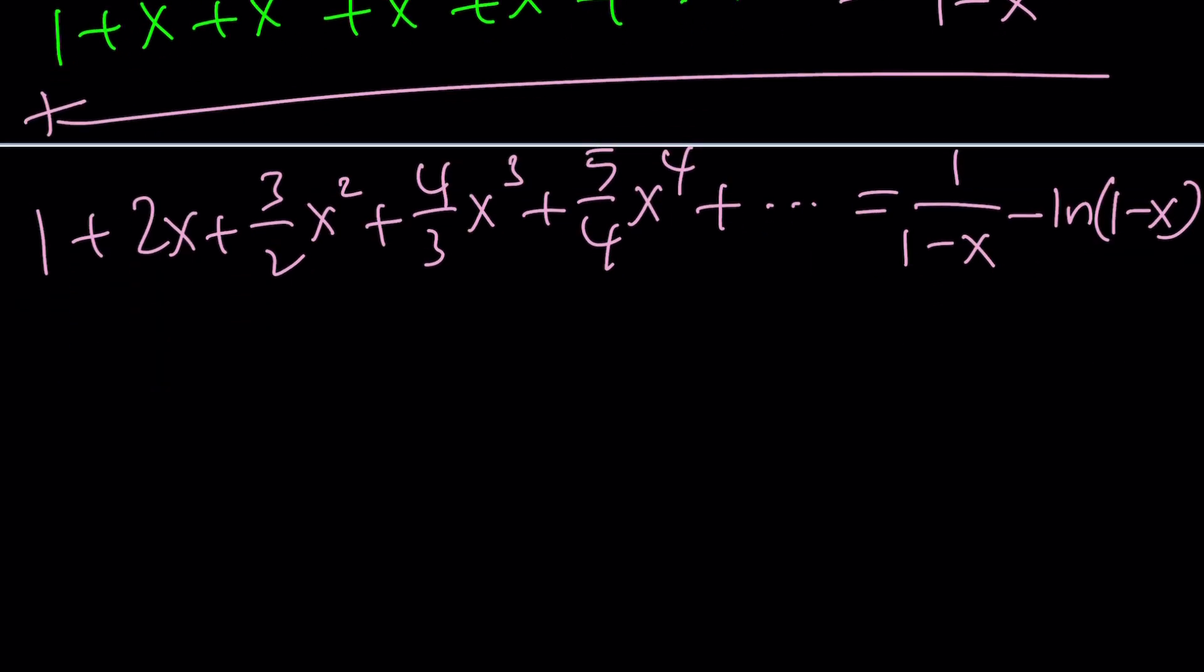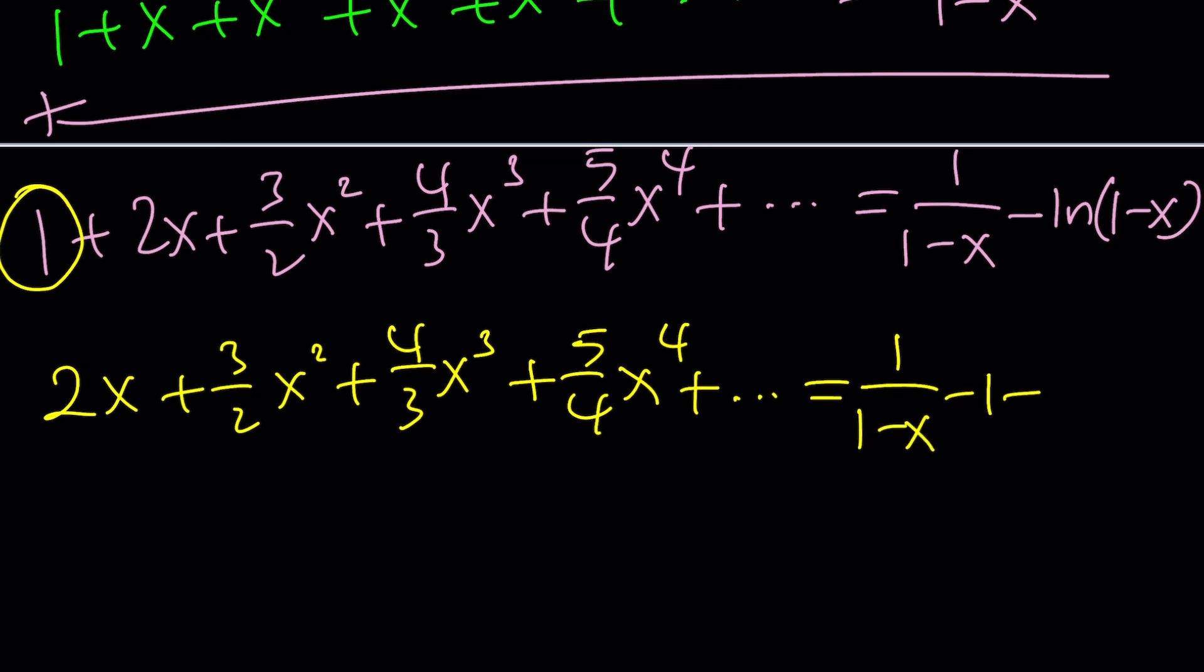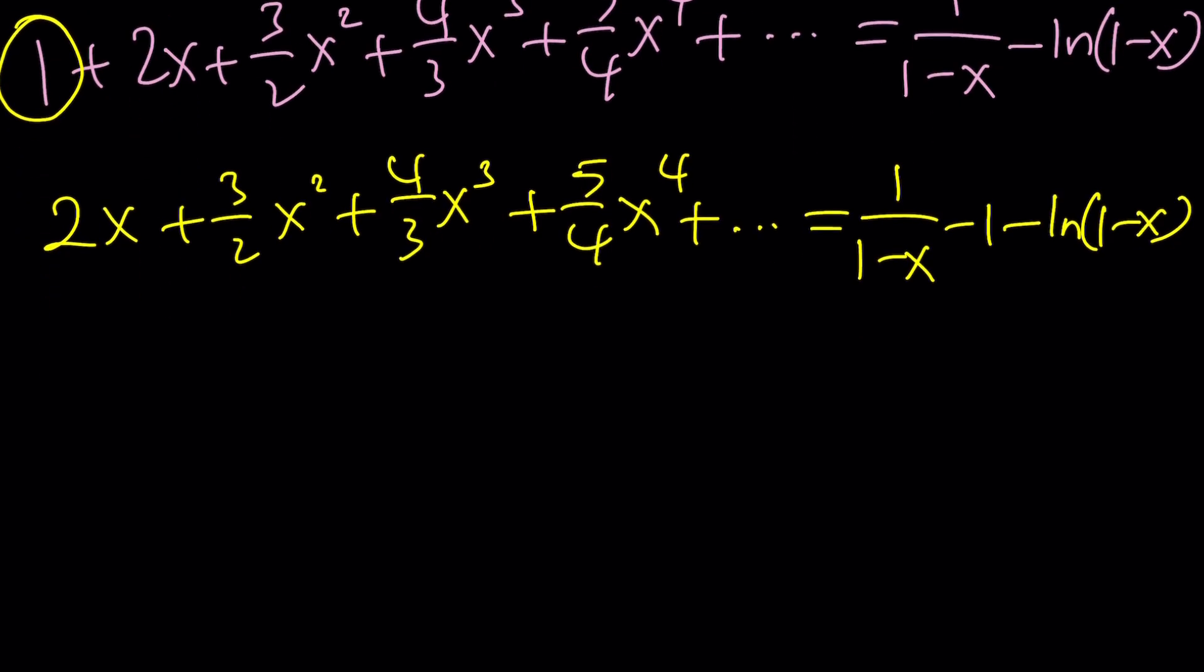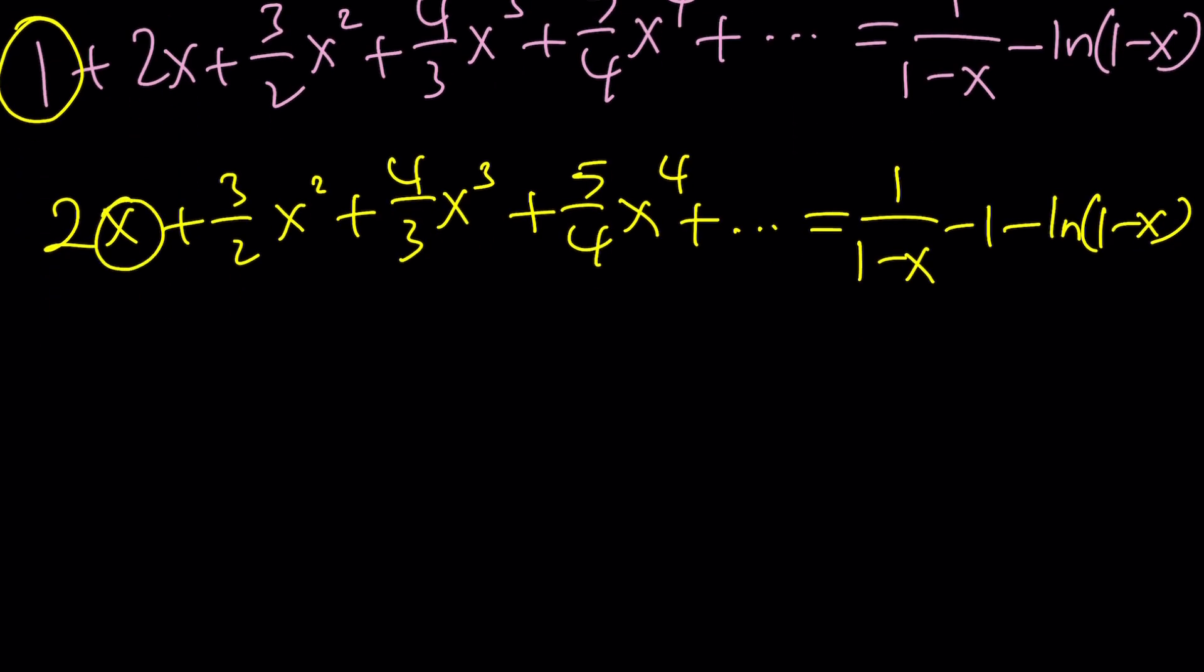Now this is not exactly what we're looking for, but we're super-duper close. You know what we need to do? Subtract 1 from both sides. That's going to give us 2x + 3/2 x² + 4/3 x³. Notice that we needed to do that so we could start with 2. We can make a common denominator here, but we want to take out an x.